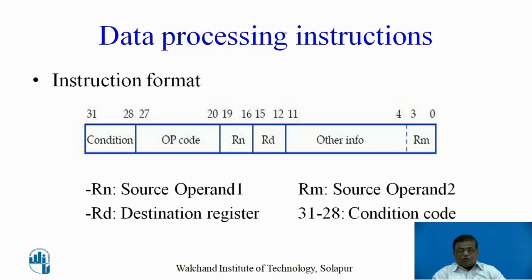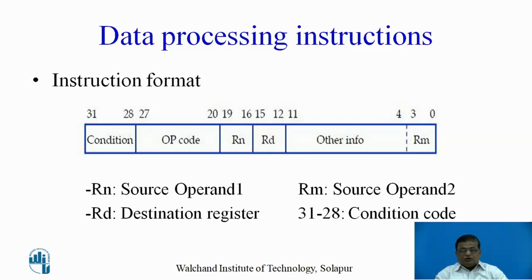As far as the instruction format is concerned, all instructions are 32 bits long, and these 32 bits are divided into various fields. For data processing instructions, the condition field is placed at bits 28 to 31. The opcode of the instruction is placed at bits 20 to 27. Bits 16 to 19 define source operand 1. Bits 12 to 15 define the destination register where the result will be stored. The lower 4 bits, 0 to 3, specify source operand 2.